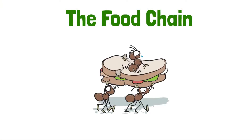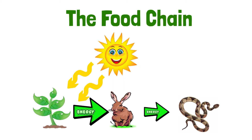Every living organism needs energy in order to survive. Plants and animals use energy to grow, move, and carry out other life processes. Energy is passed from one organism to another when one animal eats another animal or plant. This flow of energy can be shown in a food chain.